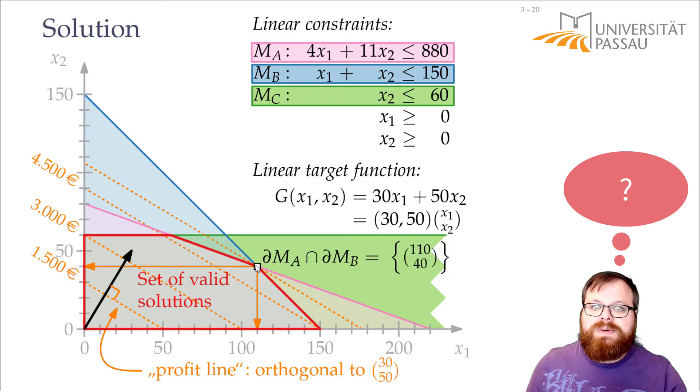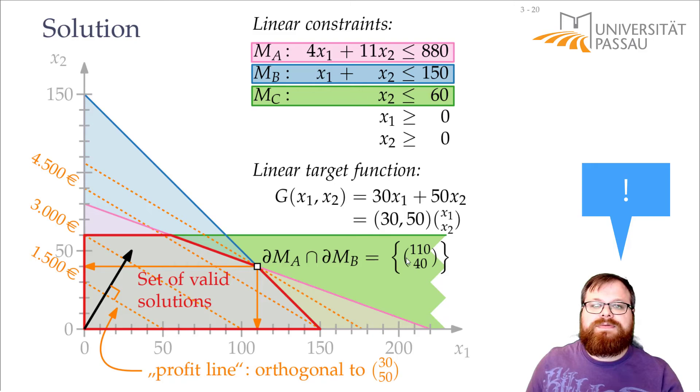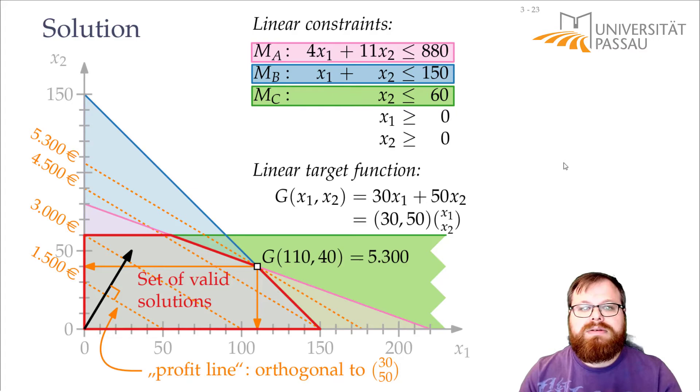And what's the profit of this point? We just take the point and plug it into the target function. So we get 30 times 110 plus 50 times 40, and then we get 5,300 Euros. So here the solution is 5,300. And you get it by producing 110 keyboards and 40 mice per day.